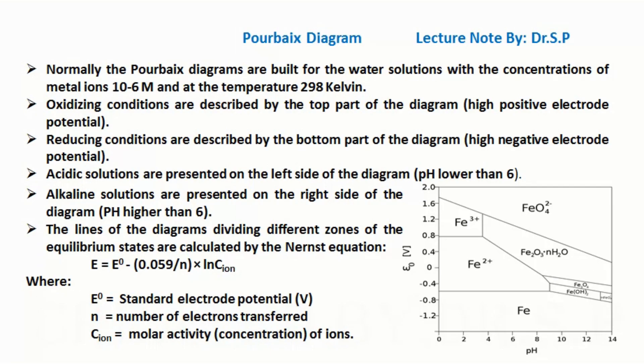That is E = E° - (0.059/n) × ln C_ion, where E° = standard electrode potential (V), n = number of electrons transferred, and C_ion = molar activity, that is concentration of ions.